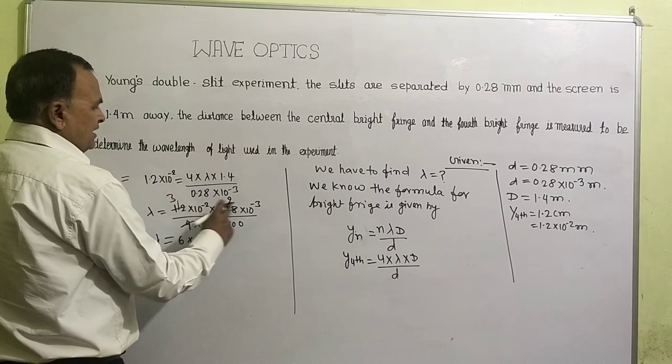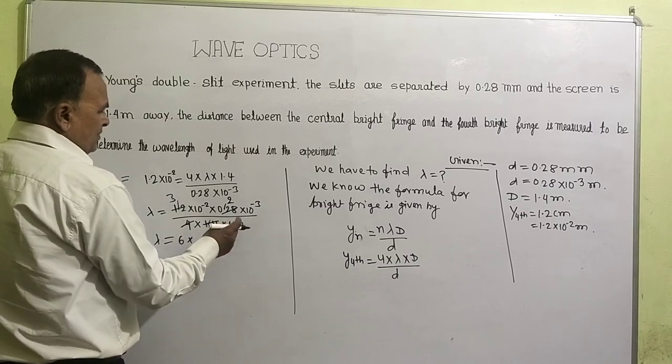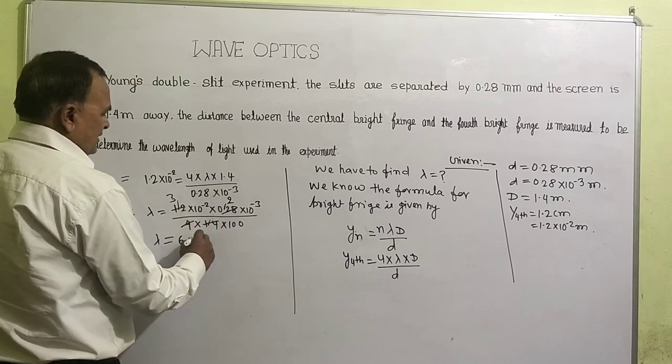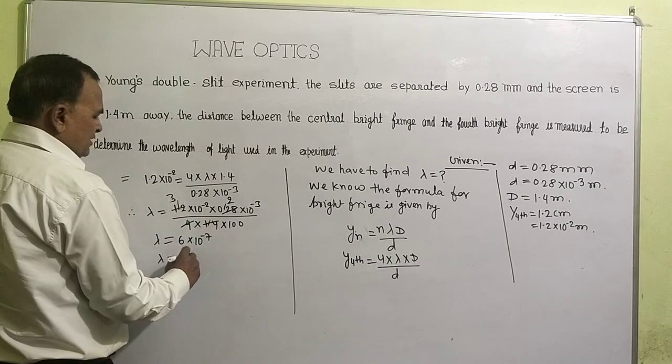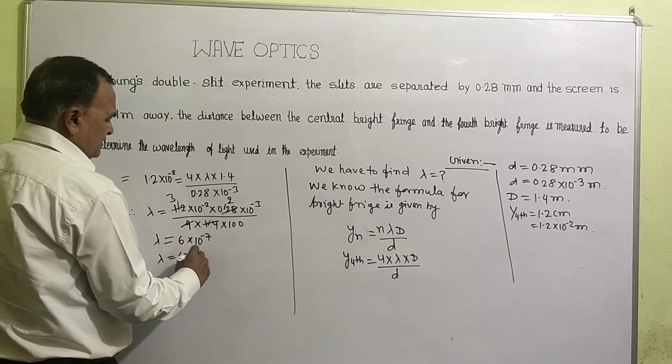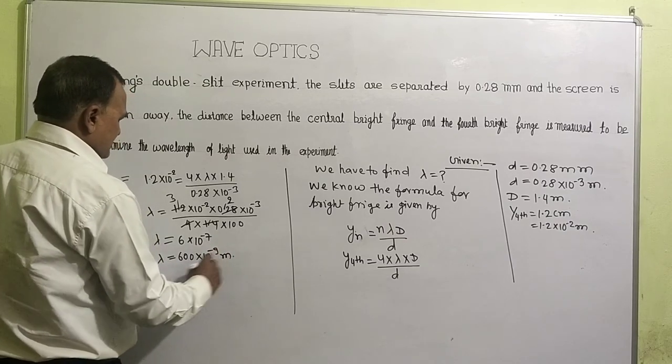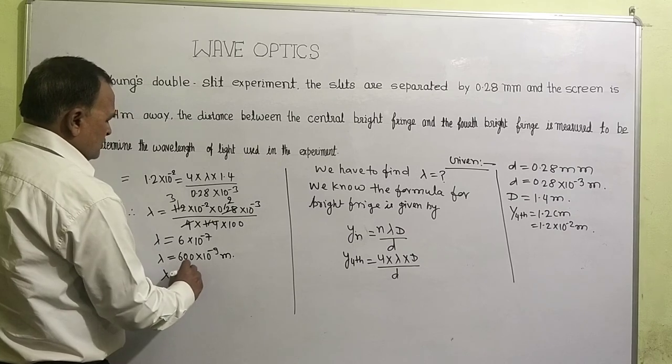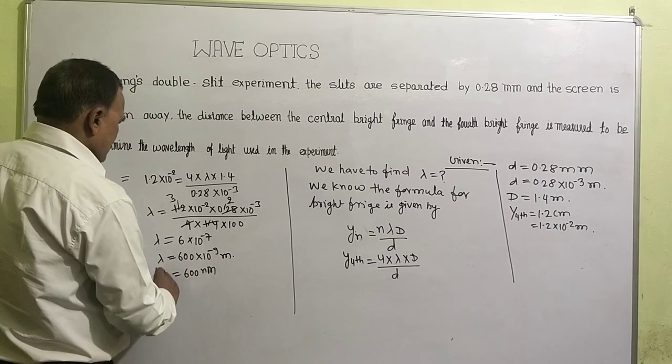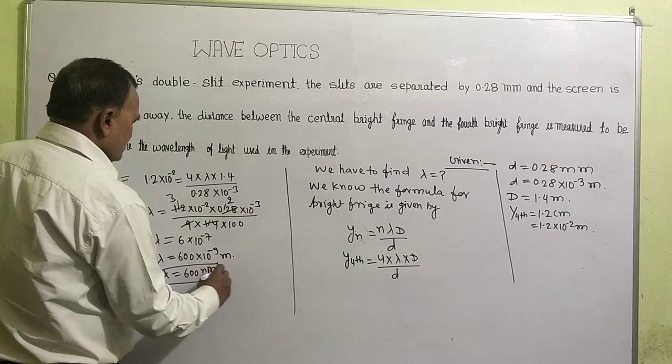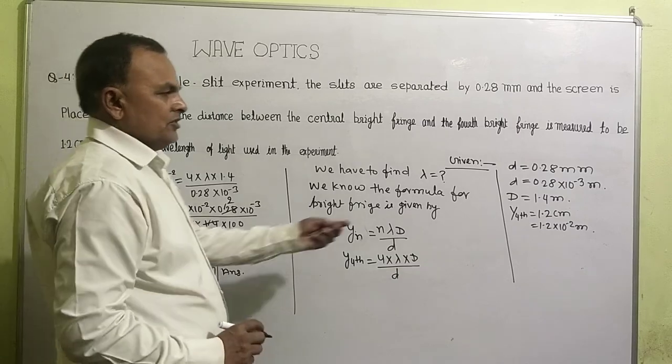Now multiplying we get lambda equals 6 × 10^-7, that means we converted to nanometer, 600 × 10^-9 meter, that is lambda equals 600 nanometer. This is the answer of this question, that is the answer.